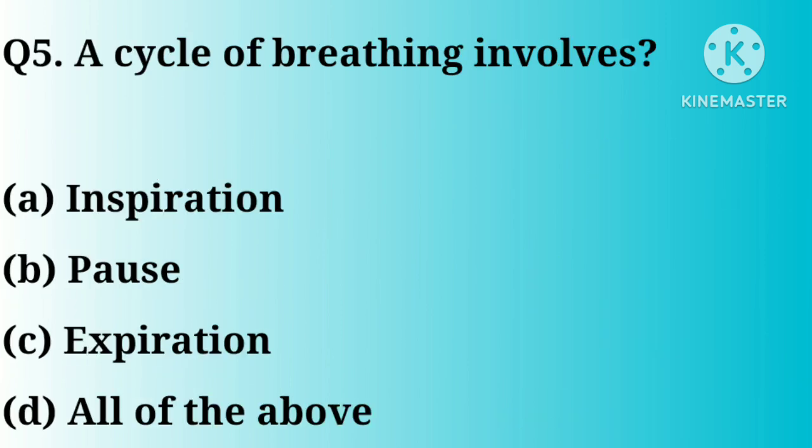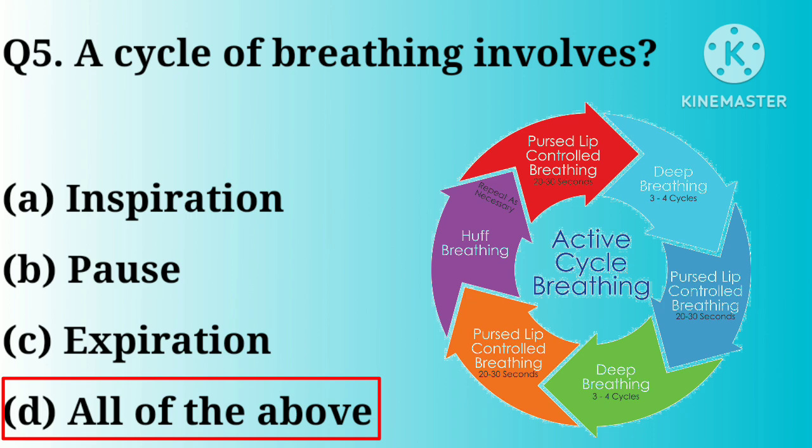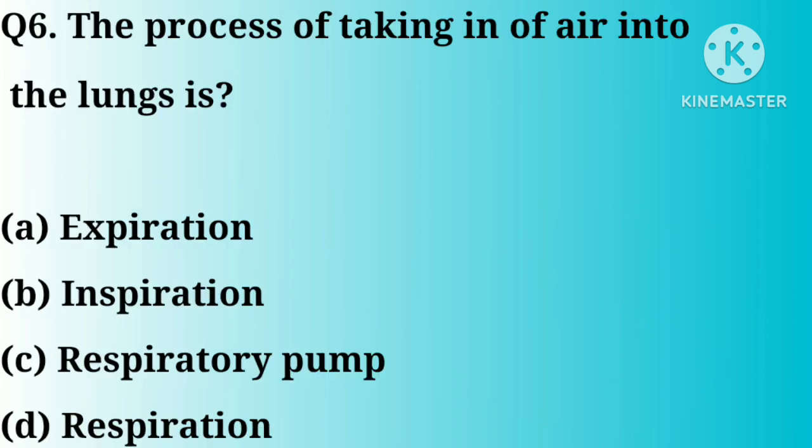Q5. A cycle of breathing involves: option A, inspiration; B, pulse; C, expiration; D, all of the above. Great answer, option D.